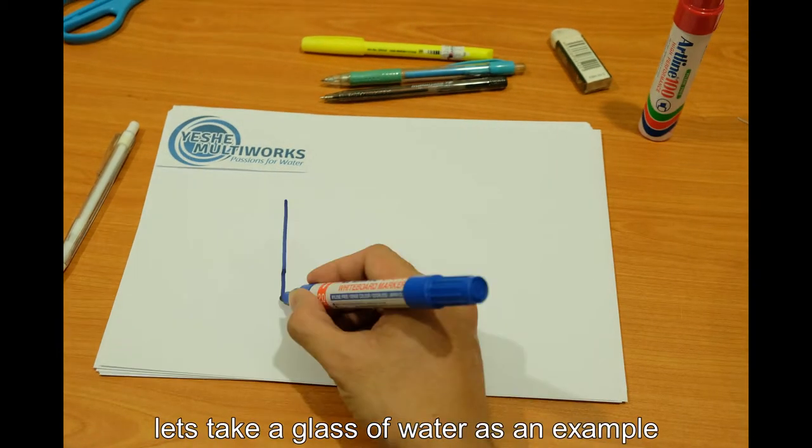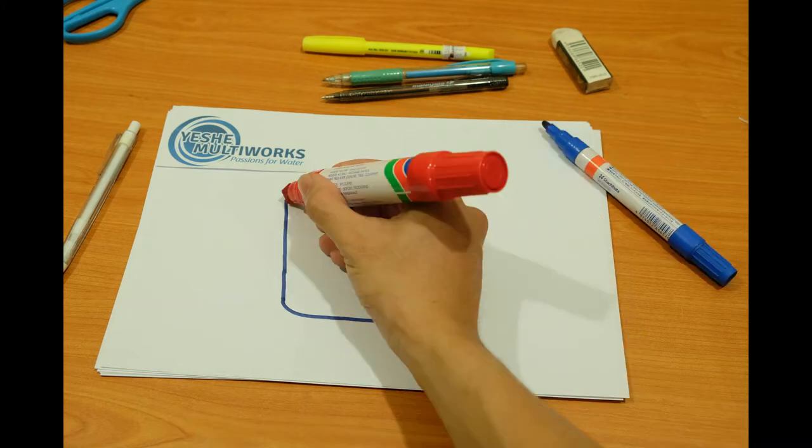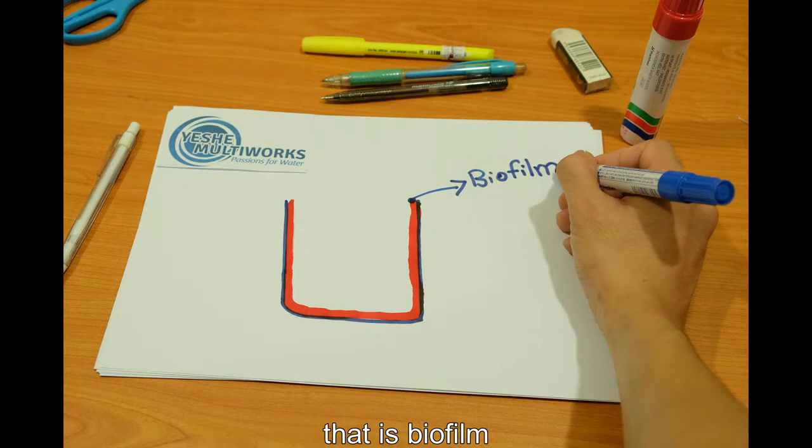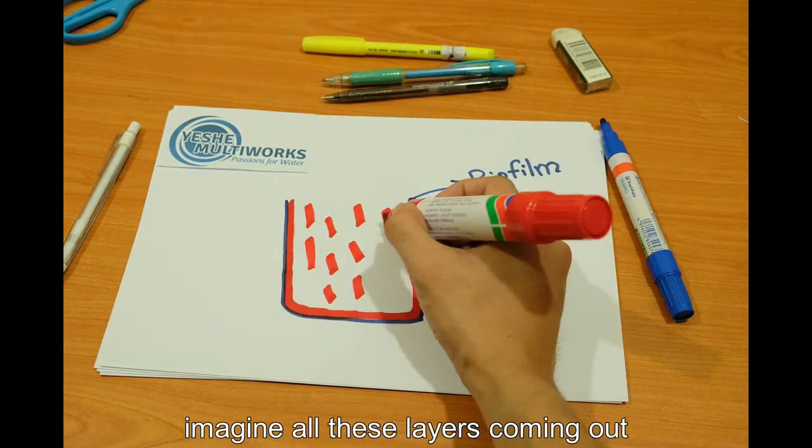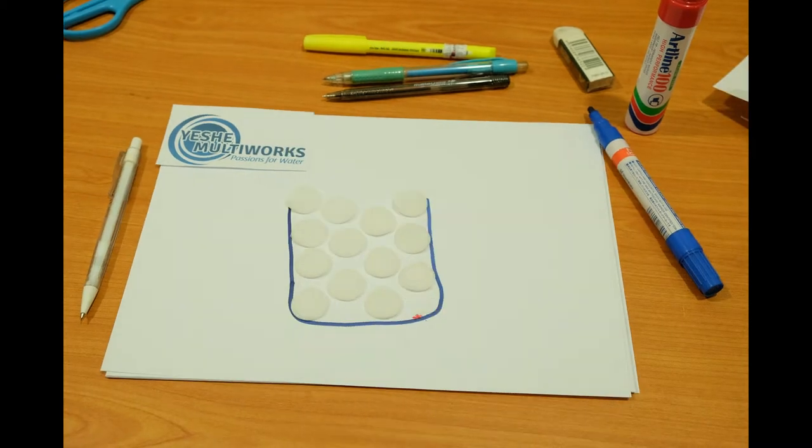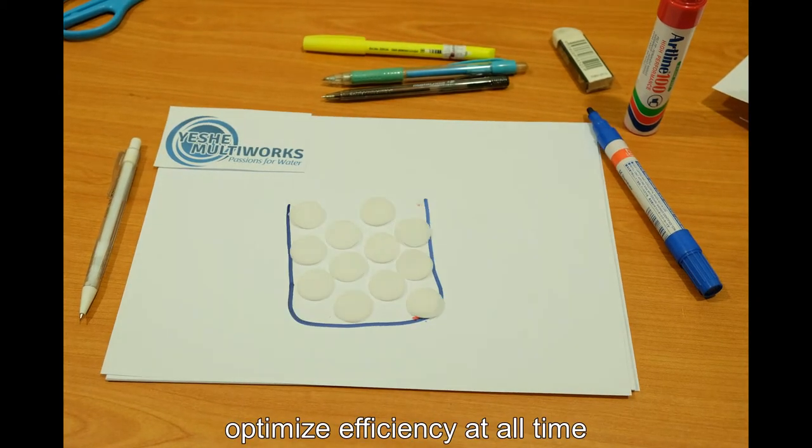Let's take a glass of water as an example. If you leave it there for a period of time, a slimy layer will develop. That is biofilm. Imagine all these layers coming up. Self-sustaining and self-cleaning. Optimized efficiency at all times.